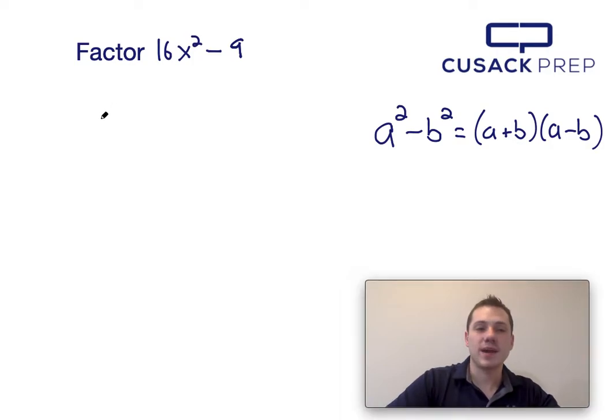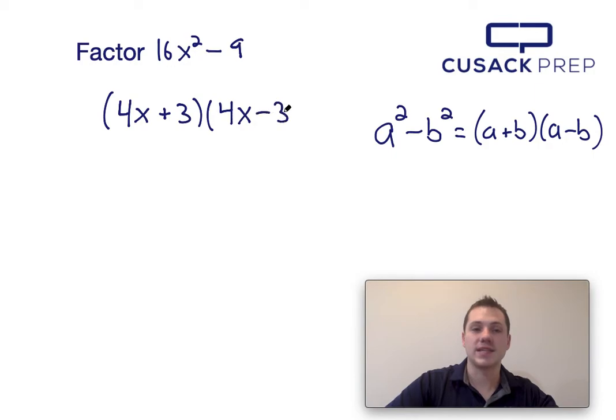So if a squared is 16x squared, that means that a must be 4x, and if b squared is 9, while taking the square root of both sides, that means that b would be 3. So 16x squared minus 9 can be factored into 4x plus 3 times 4x minus 3 via the difference of squares equation. Thank you for watching.